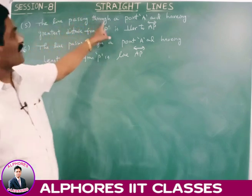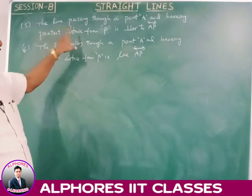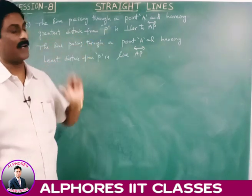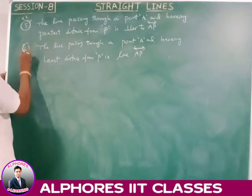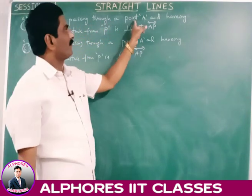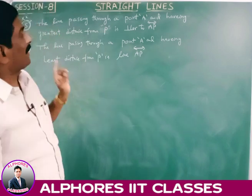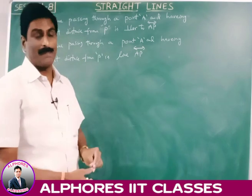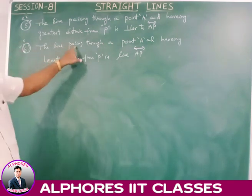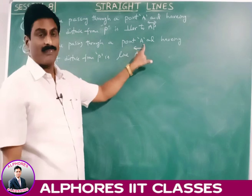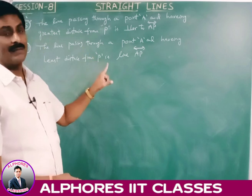Fifth important property: the line passing through a point A and having the greatest distance from point P is perpendicular to AP. Sixth important property: the line passing through point A and having the least distance from point P is the line AP itself.